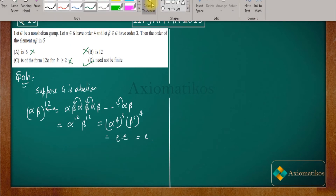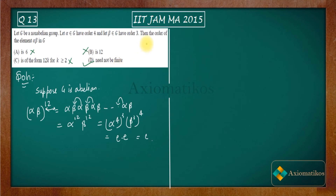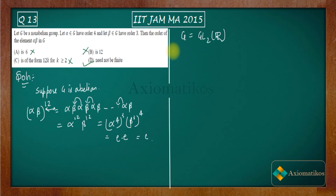Even though both elements have finite orders inside a non-abelian group, their product can have infinite order. To support this, I can generate a counter-example where alpha has order 4 and beta has order 3, but alpha beta has infinite order. Consider the general linear group GL(2) — the group of invertible 2×2 matrices — and choose two elements from it.